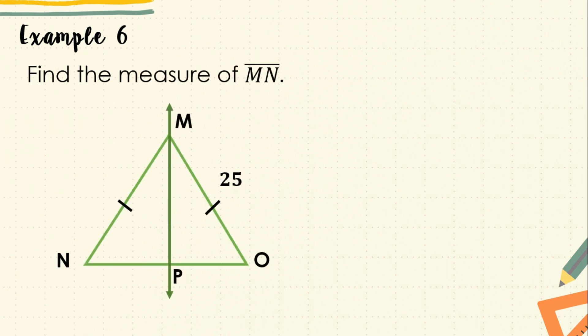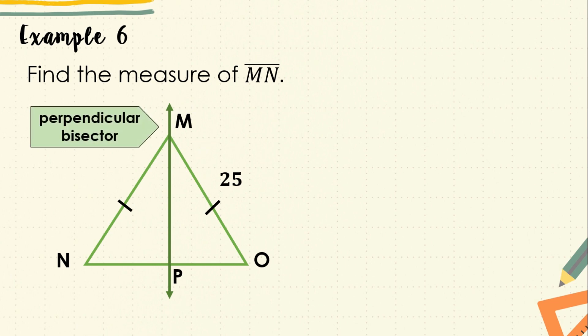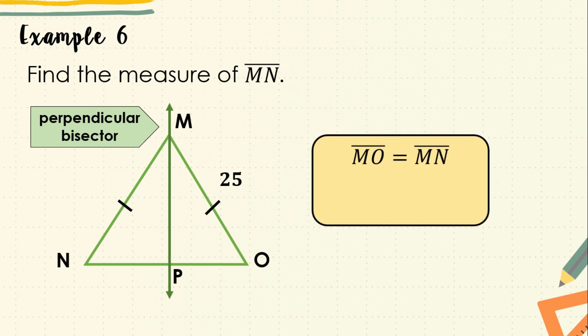Now it's time to apply what we have learned. Let's have an example — find the measure of segment MN. In this figure, we have triangle MNO and perpendicular bisector MP. By applying the perpendicular bisector theorem, we can conclude that MO equals MN. Since the measure of MO is already given as 25, therefore the measure of segment MN is 25.